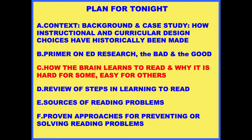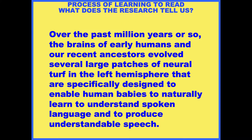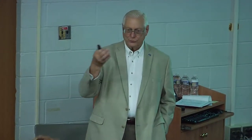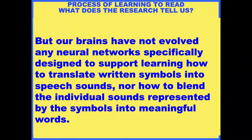How the brain learns to read and why it's hard for some and easy for others — this is data that came from the NICHD studies. The part of the brain that is hardwired to learn how to talk and understand speech is in the left temporal hemisphere. Virtually all good readers process language there, and this is the part of the brain that lights up on an fMRI image when a child is learning to talk or learning to read.